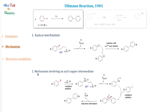The second mechanism includes an oxidative addition of the copper to the aryl halide, followed by a single electron transfer to form an organocuprate species. The organocuprate then performs another oxidative addition on an aryl halide, followed by a reductive elimination to give the final biaryl product.